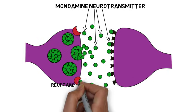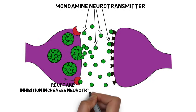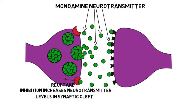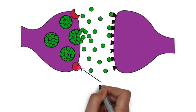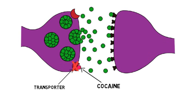Reuptake is a method of removing neurotransmitters from the synaptic cleft between neurons. When reuptake is inhibited, it causes increased levels of neurotransmitters in the synaptic cleft. Cocaine inhibits reuptake by blocking the action of the proteins known as transporters that are normally responsible for it.